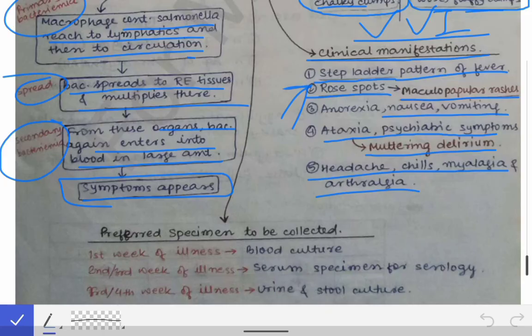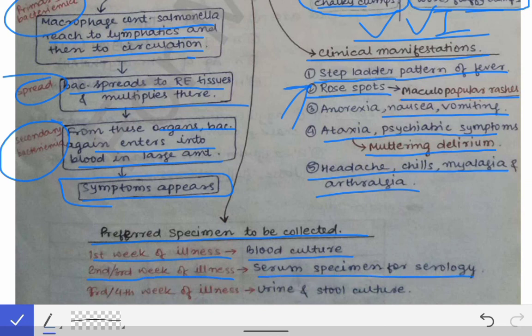Regarding specimen collection in Salmonella enteric fever: in the first week of illness, blood is collected for blood culture. In the second and third week of illness, blood is collected for serology. In the third and fourth week of illness, urine and stool cultures are more sensitive and are the preferred specimens.